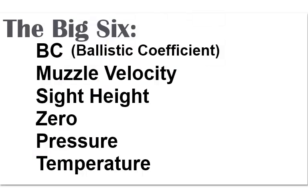We need to tell our ballistic app six things before we start shooting: BC, muzzle velocity, sight height, zero, pressure, and temperature.